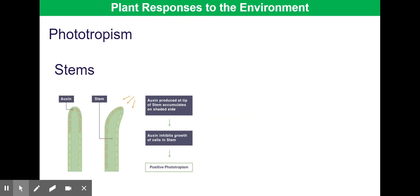Let's look at phototropism in more detail. In the stem, the first image shows an even distribution of auxin, then we introduce a directional light source. Auxin is produced at the tip and accumulates on the shaded side because it diffuses away from light. Since auxin promotes cell growth in stems, the cells on the shaded side start elongating, causing the stem to bend towards the light.